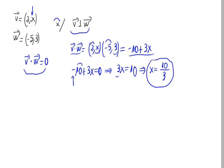So, the value of x that makes these two vectors perpendicular is 10 divided by 3.